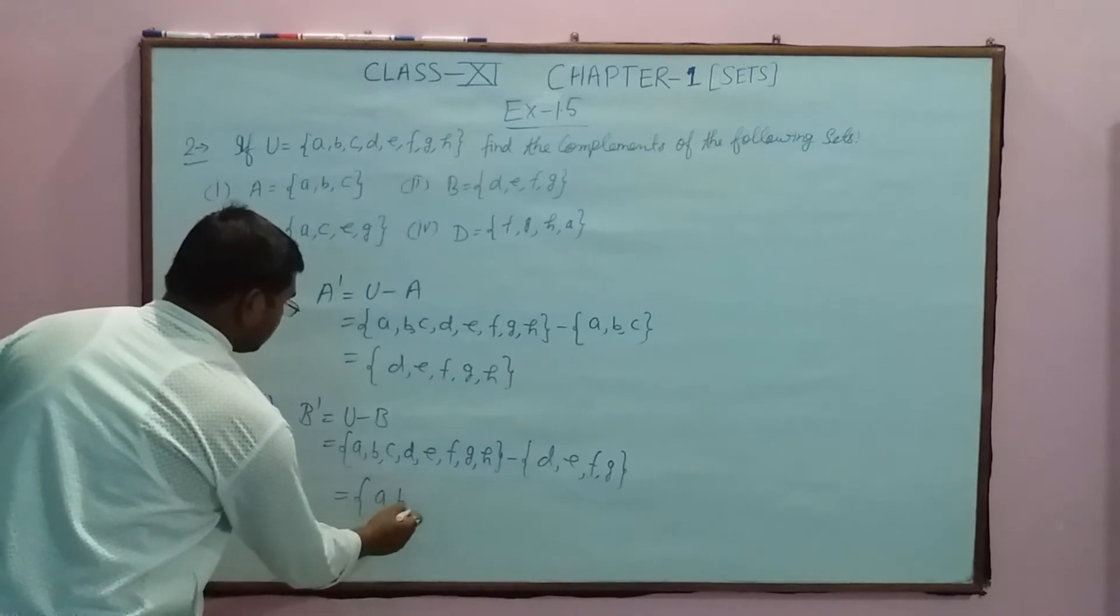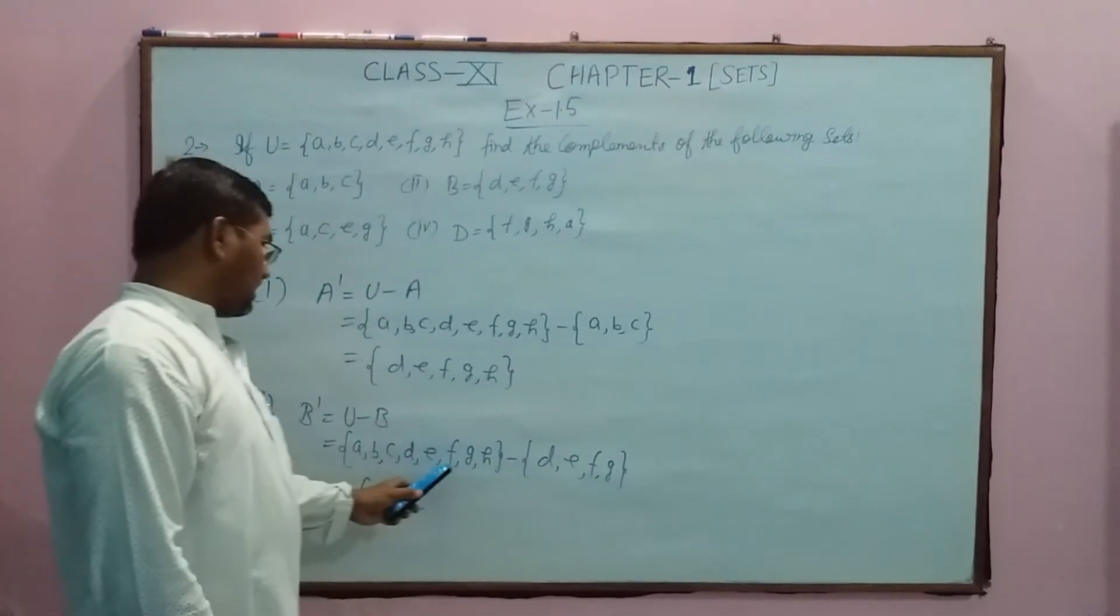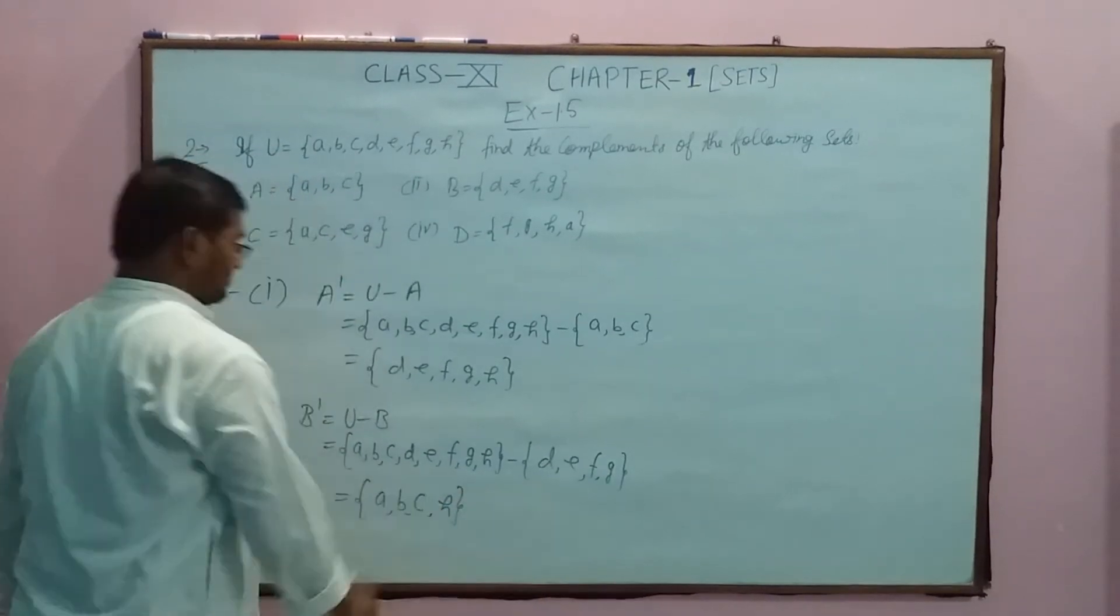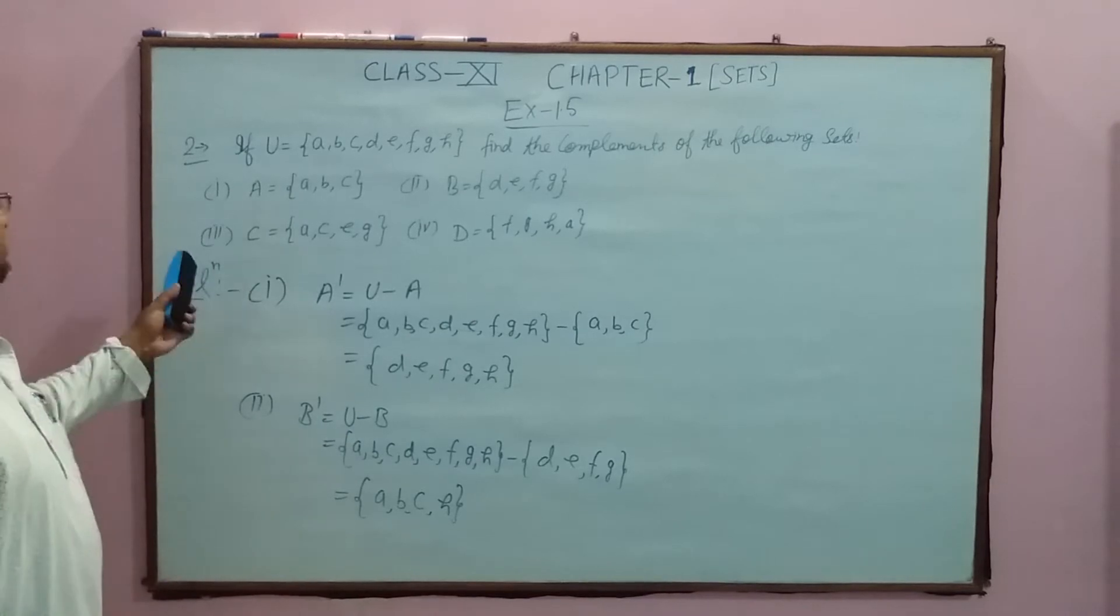A, c, d, h. So this is {a, c, d, h}. Clear? So this is the third part.